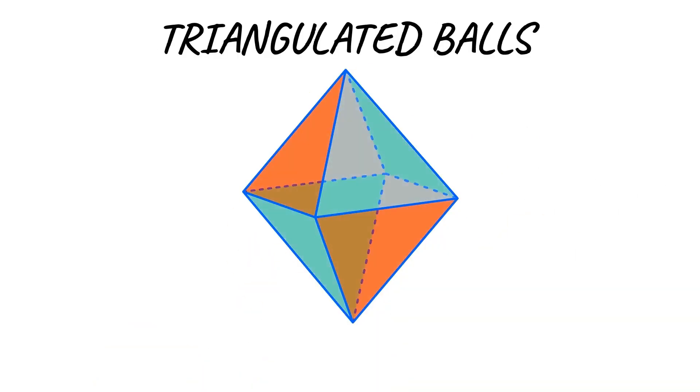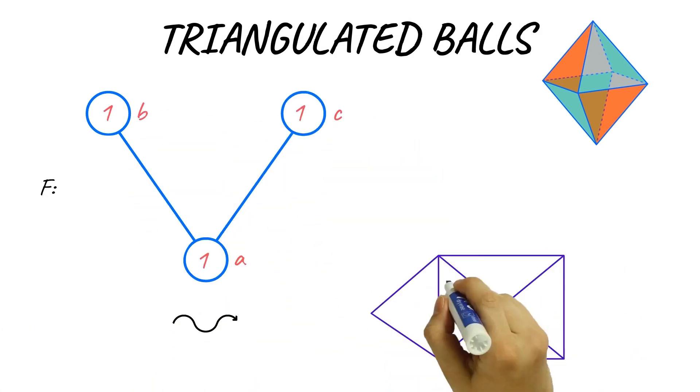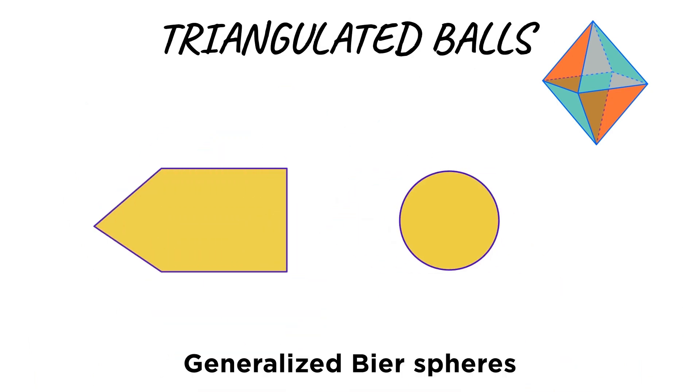Complexes from letterplace ideals are topologically balls. The boundary is a triangulated sphere.